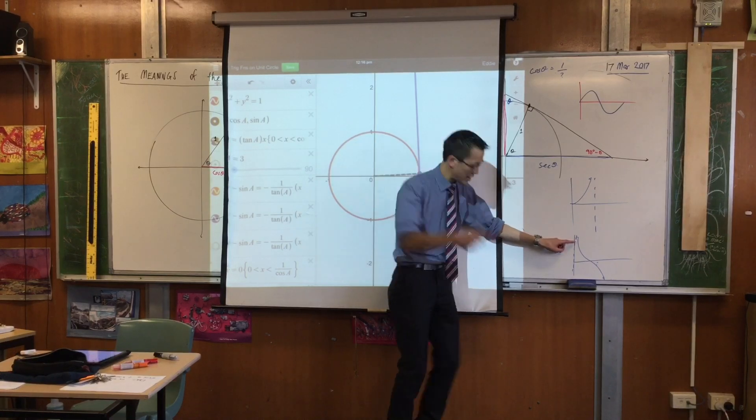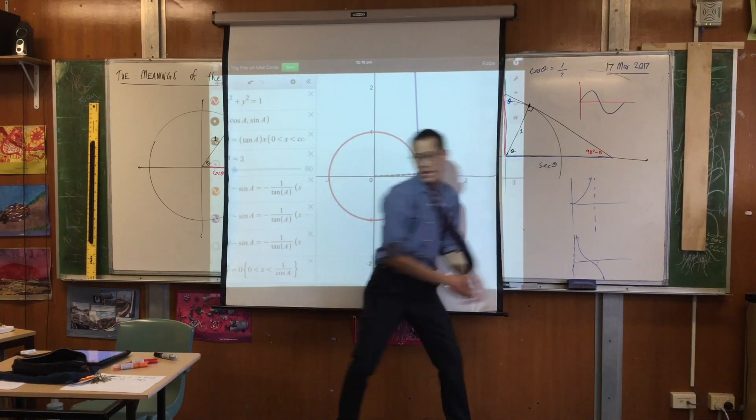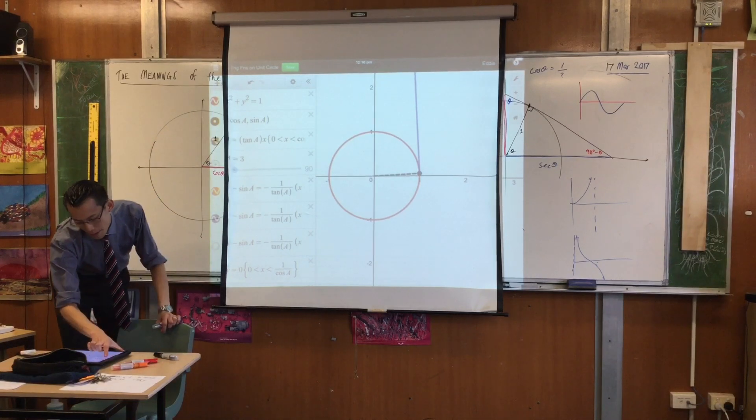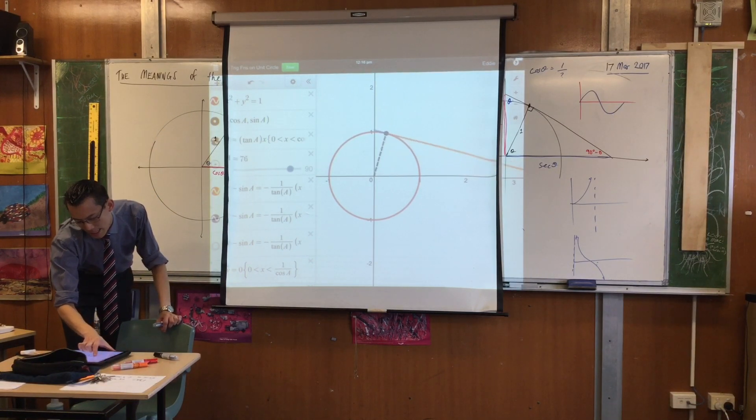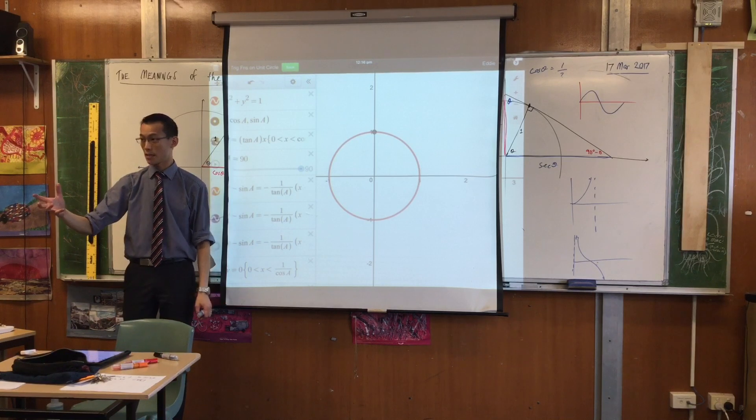And then as I approach 90, look what happens to cot theta. It drops down. Of course it drops down, because look, it gets shorter and shorter and shorter and shorter until it doesn't exist anymore. Does that make sense?